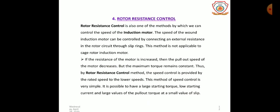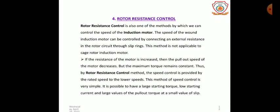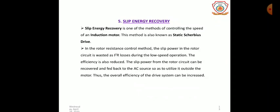The rotor resistance control method is an important method of controlling the speed of an induction motor. The speed of a wound induction motor can be controlled by connecting an external resistance in the rotor circuit. The larger the value of resistance, the larger the slip at which maximum torque occurs. This method provides speed control from rated speed down to lower speeds. It is a very simple method, with examples including fan and pump drives.